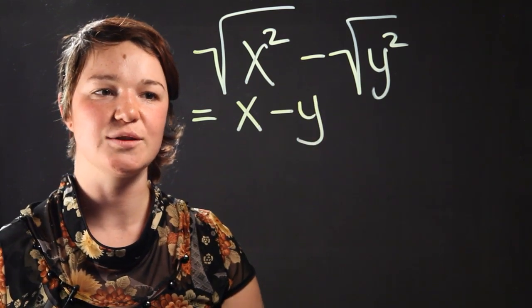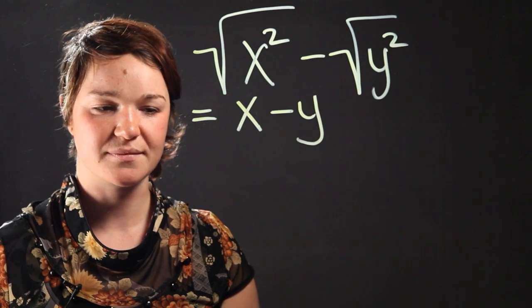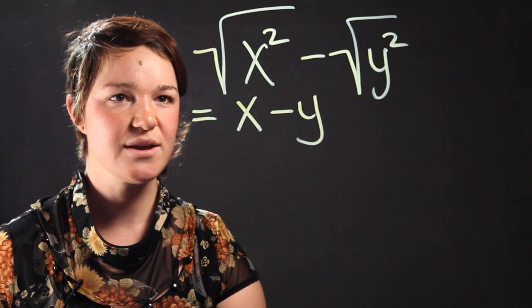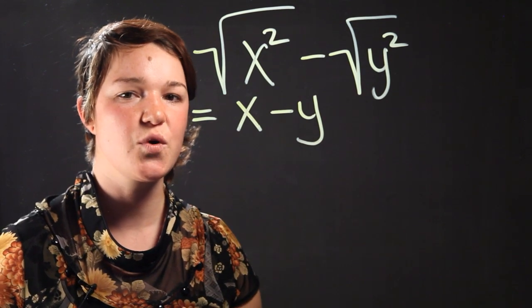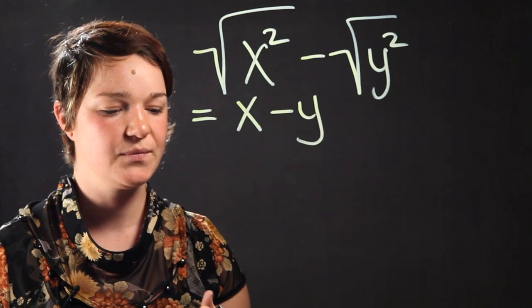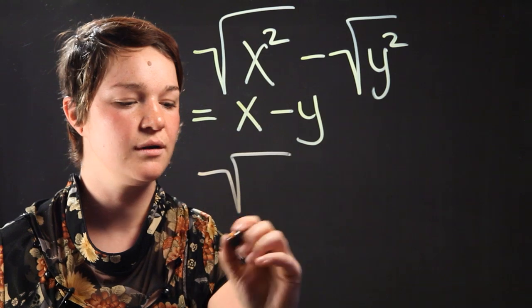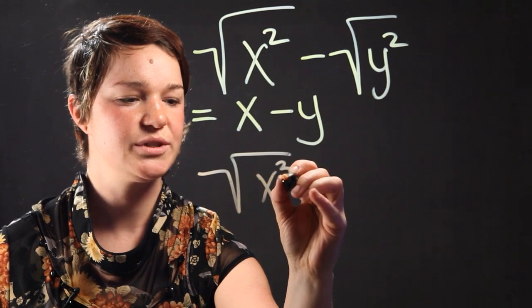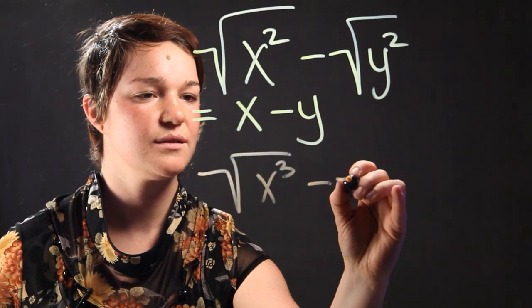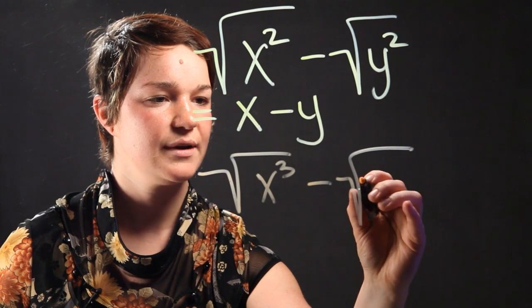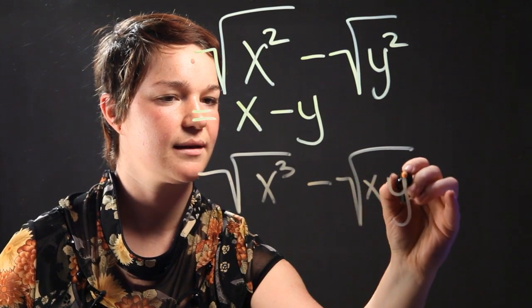There you have it. That's the solution to our first problem. So let's say you have a slightly more difficult problem. We're going to say, let's solve the radical of x cubed minus the radical of xy squared.